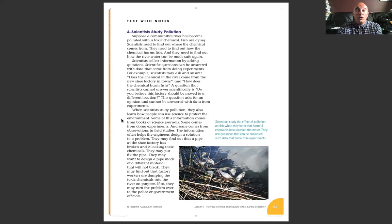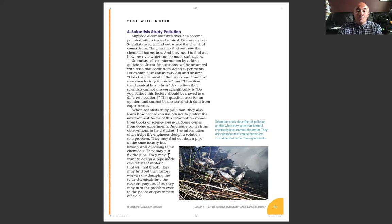When scientists study pollution, they also learn how people can use science to protect the environment. Some of this information comes from books or science journals, some from doing experiments, and some from observation in field studies. The information often helps engineers design a solution to a problem. They may find out that a pipe at the shoe factory has broken and is leaking toxic chemicals, and they may fix the pipe or design a pipe made of different material that will not break.